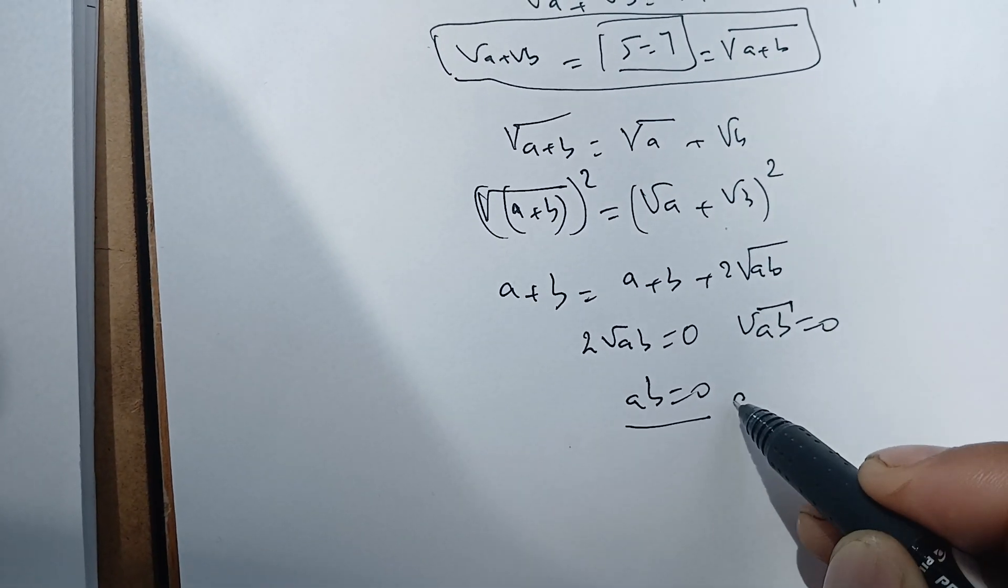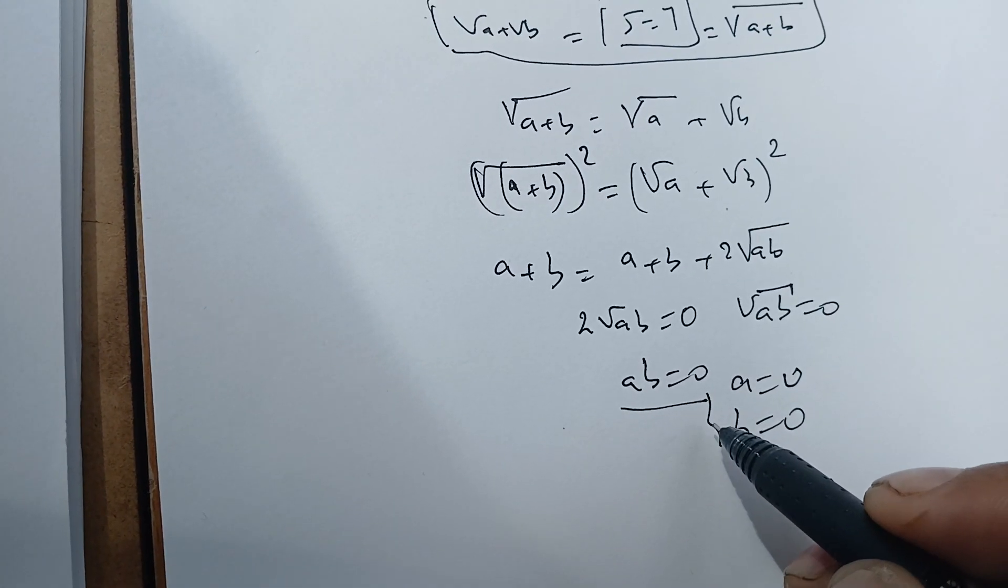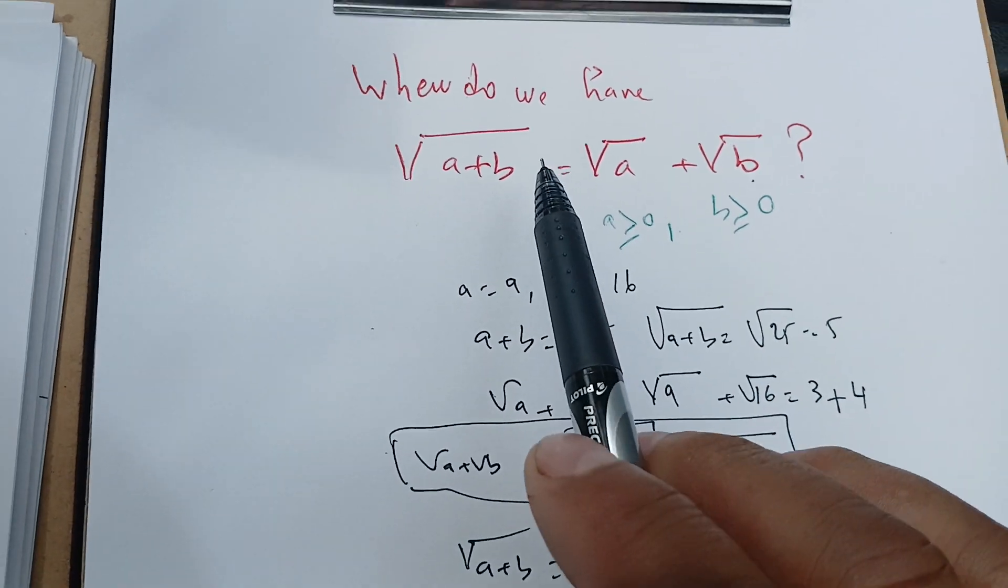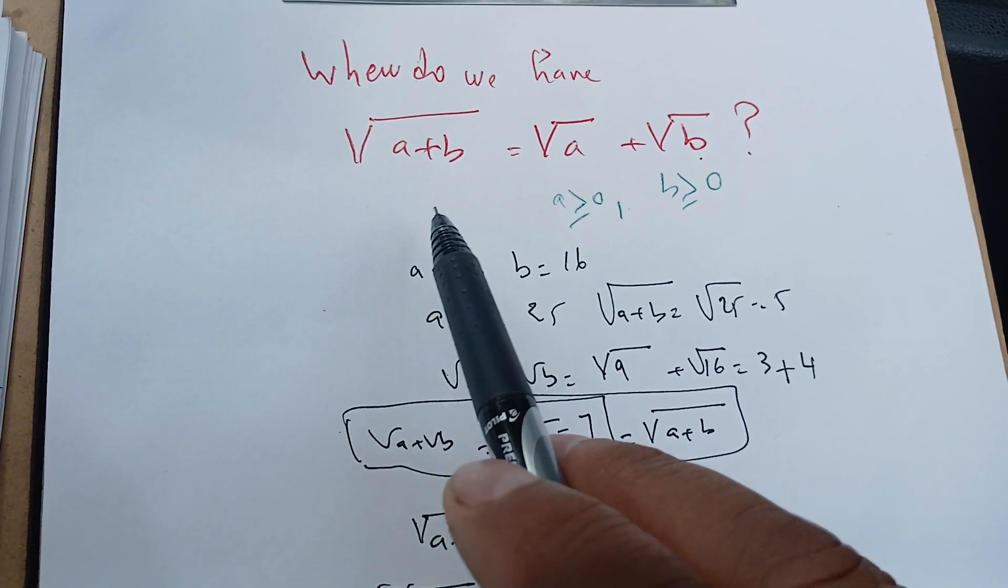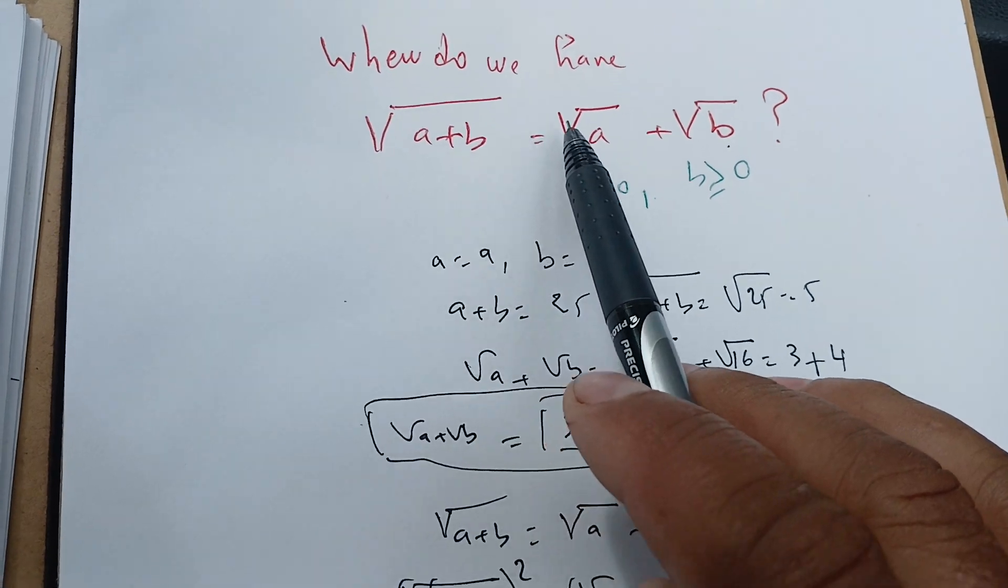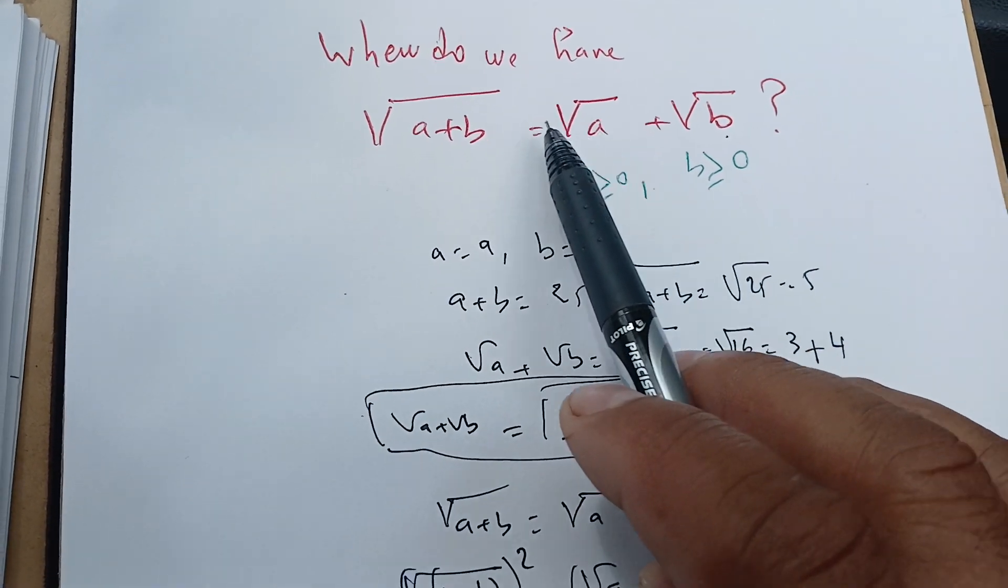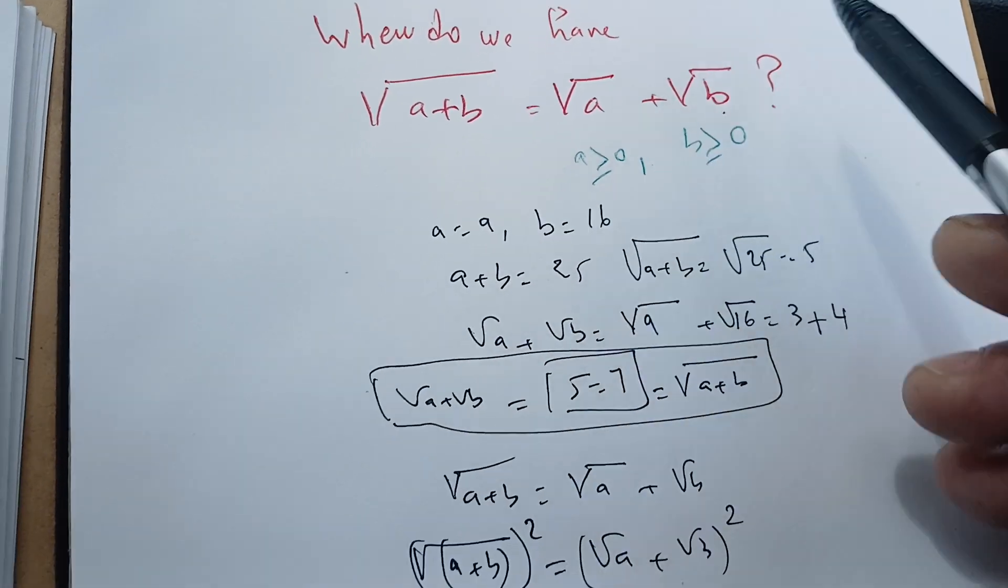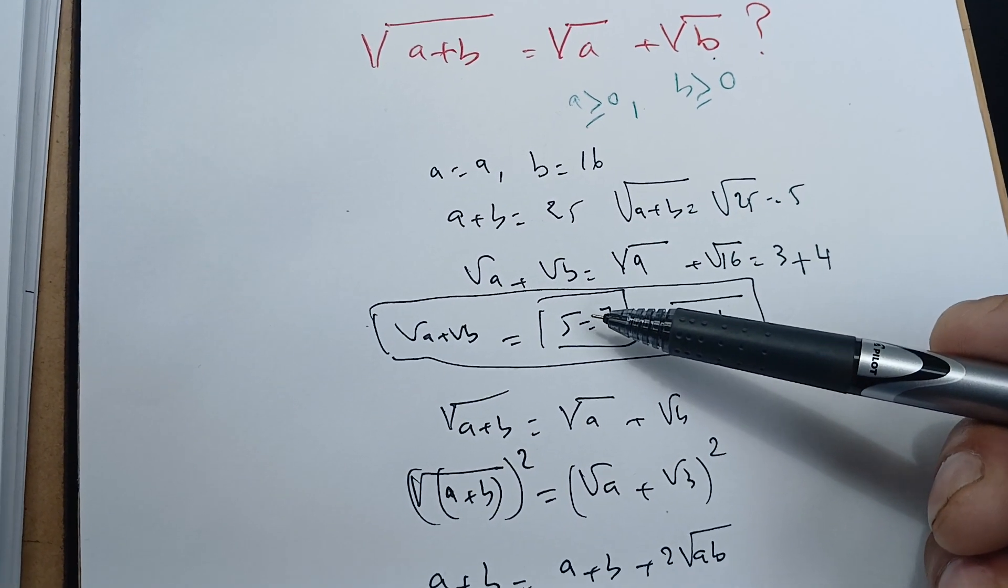That means here a is zero or b is zero. So when we have when b is zero or a is zero, we have this result, this is true. But in general, when both a and b are different from zero and positive, this is not true at all, and this gives an example of why it's not true.